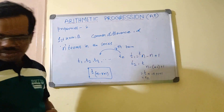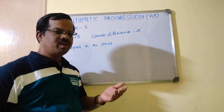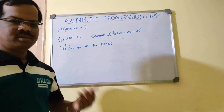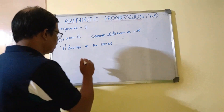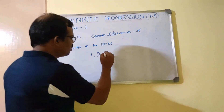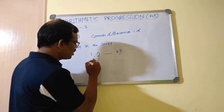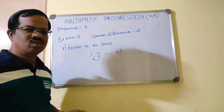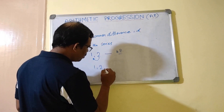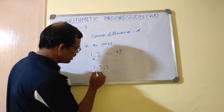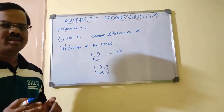Now we move to the third property. It is actually about how you express an arithmetic progression — always mention at least three numbers in the series. Do not just say 1 and 2, because with only two numbers there is no other number to confirm that the same difference is repeated. Say 1, 2, 3, then people can see there is a common difference being repeated. So always mention at least three numbers in the series.